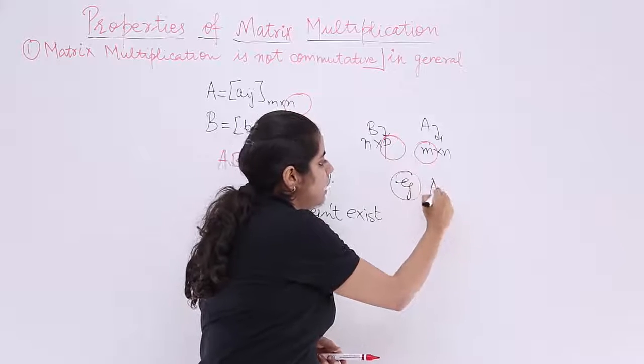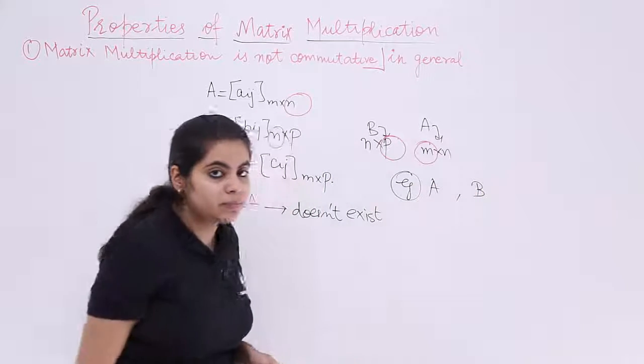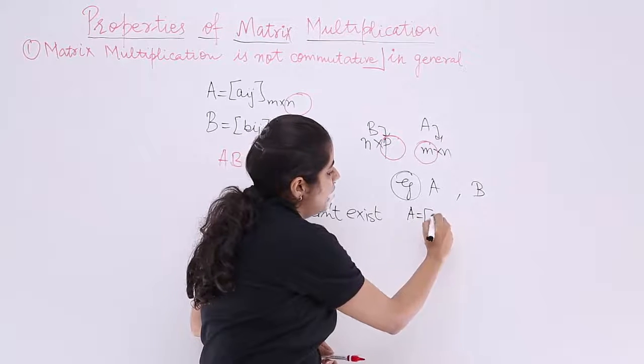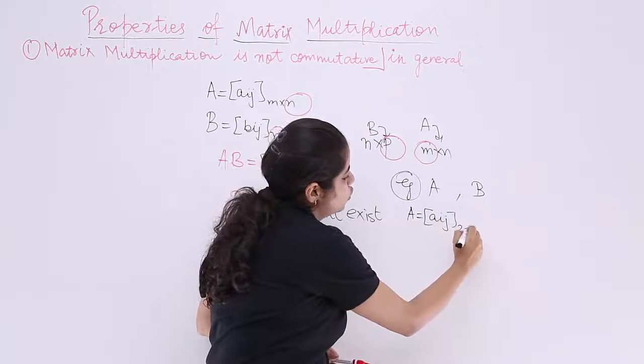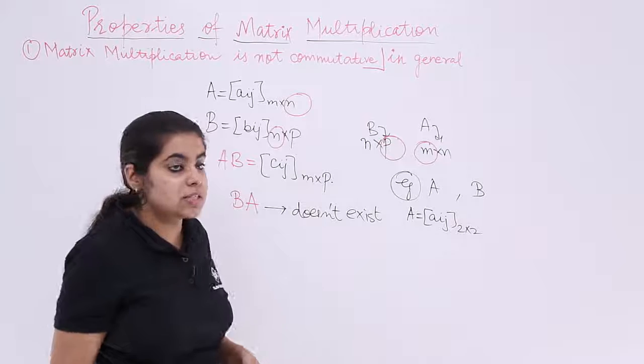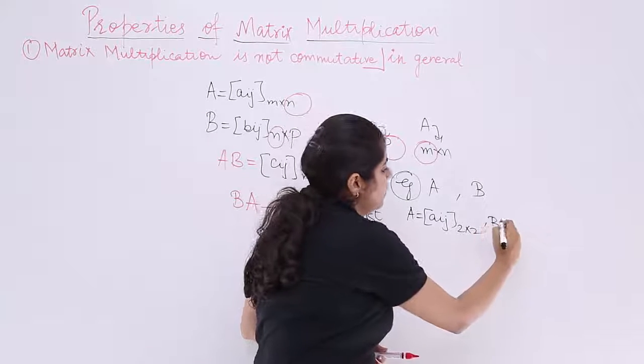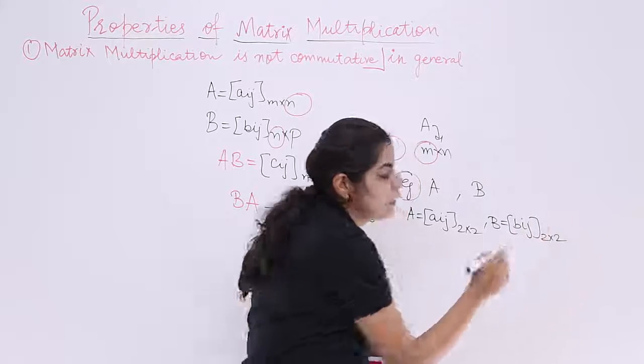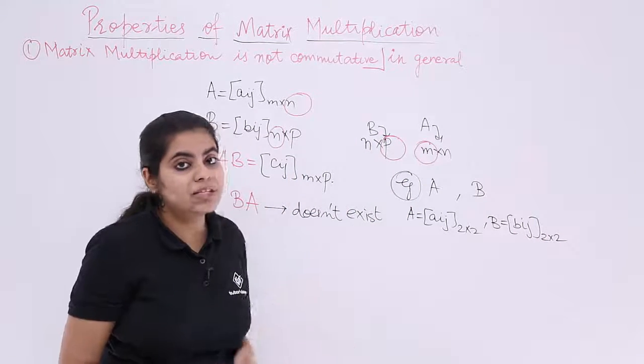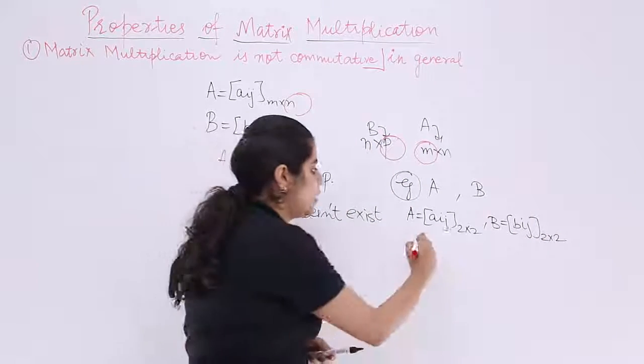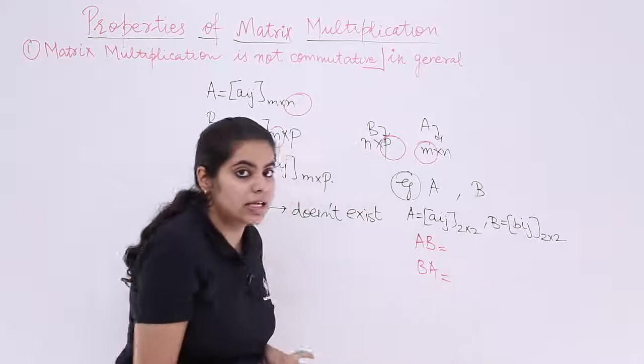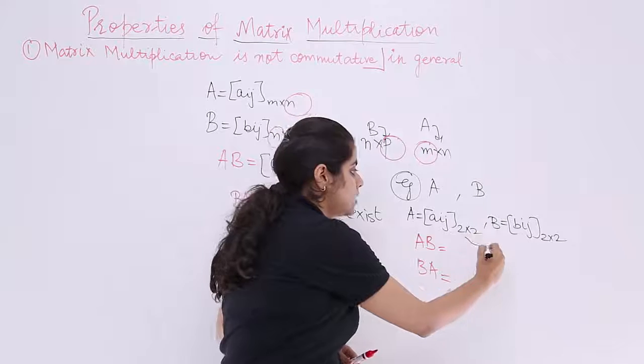Suppose I have an example. I have two matrices A and B. The matrix A is such that it is say A_ij 2×2, a 2×2 matrix, and a matrix B which is B_ij and a 2×2 matrix. Both these have the same orders. Now, what about AB and BA? AB, does it exist? Let's look at it.